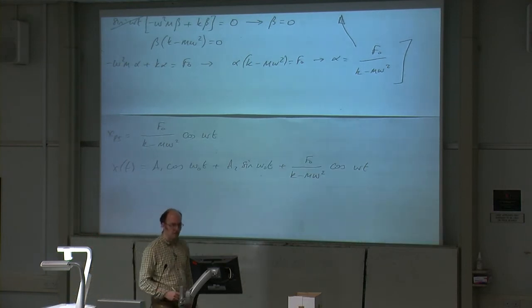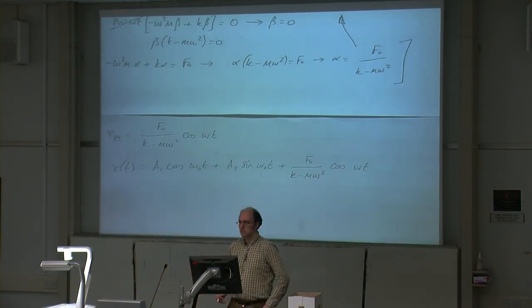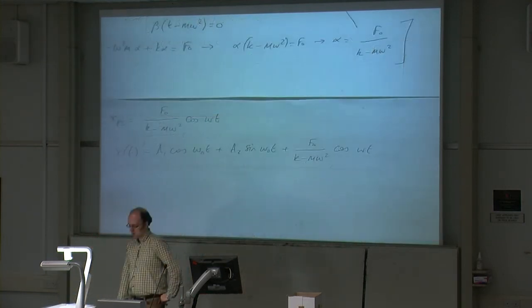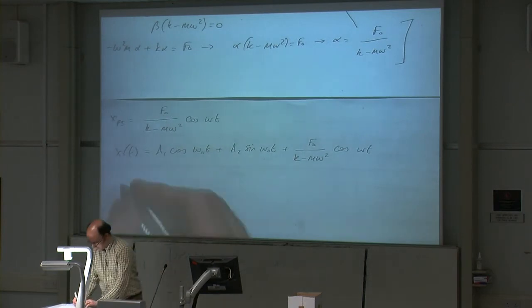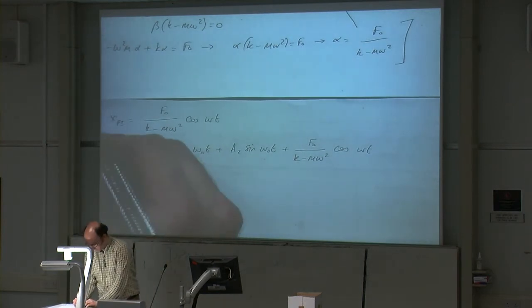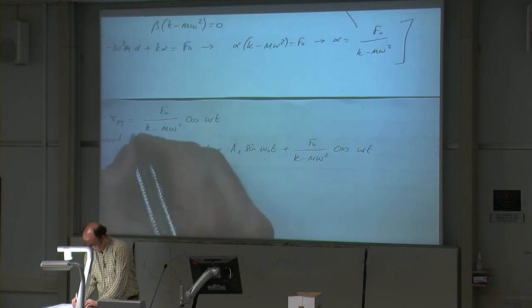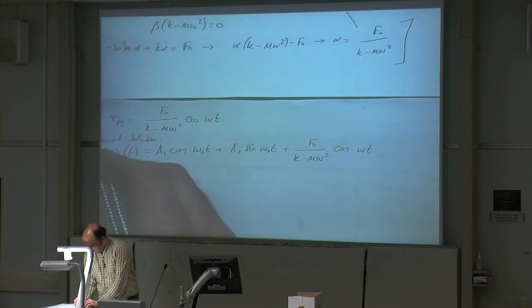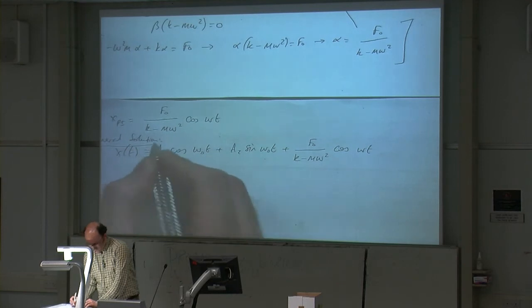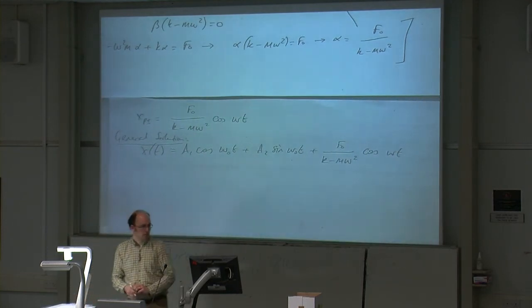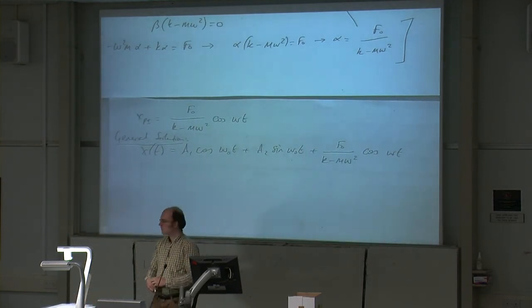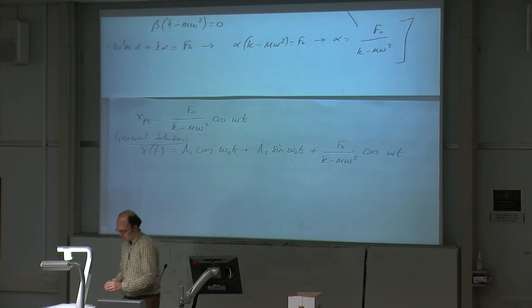So x of t is xcf plus xpi: we've got a1 cosine omega-naught t plus a2 sine omega-naught t plus f0 divided by (k minus m omega squared) times cosine omega t. That's the general solution.